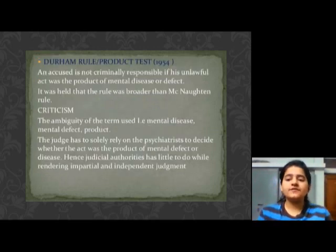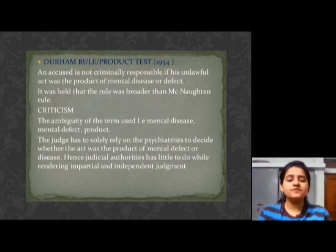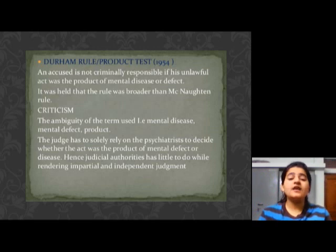The Durham Rule was given in 1954. It is also called the product test. According to the Durham Rule, it is a principle of criminal law used to determine the validity of the insanity defense asserted by an accused — that he or she was insane at the time of committing the crime and therefore should not be held legally responsible for his actions.